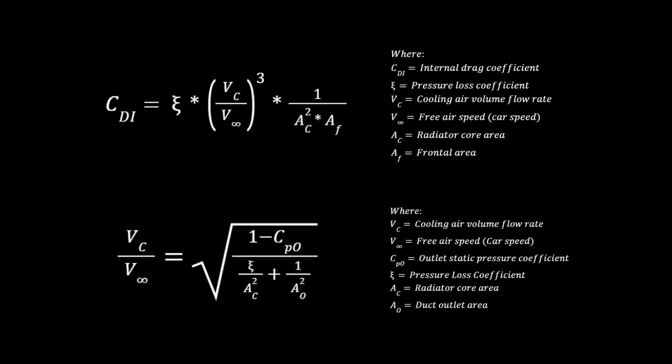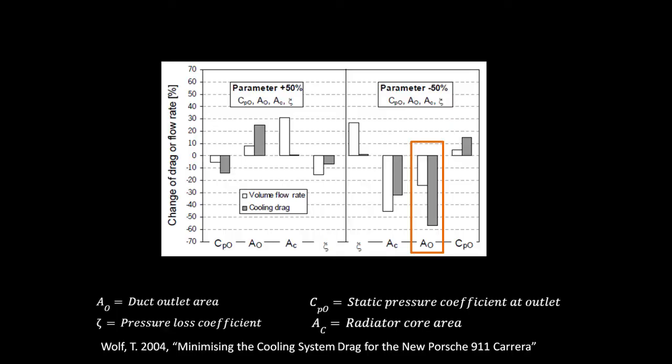When we compare the impact each of the four main components of the drag equation have on the cooling and drag for the 2005 Porsche 911, that is the pressure loss coefficient, the area of the radiator core, the outlet area, and the static pressure at the outlet, we can see that reducing the outlet area by 50% gave the largest drop in drag for the least impact on cooling flow.